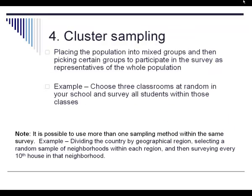Cluster sampling: you place the population into mixed groups and then pick a certain group to represent all of your population. For example, a school is divided into classes that have freshmen, sophomores, juniors, and seniors all together. You choose three classrooms at random and survey all the students. You have multiple grade levels, multiple races, and multiple genders in that room — they're mixed groups representing the population as a whole.